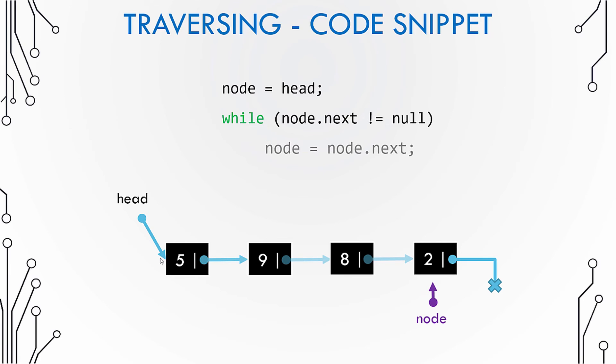Now we are pointing to the last node, and in this case the while loop will fail because there is no next pointer available. It means that the next pointer is basically null for the last node. Hence we conclude that we have completed traversal of this list because we have reached the last node.